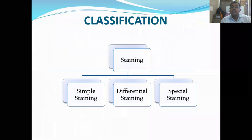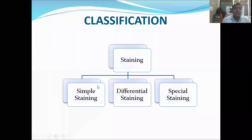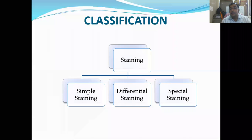Now, staining methods are principally classified into three important classes: simple staining, differential staining, and special staining. Simple staining is simple to perform with a straightforward procedure. Differential staining helps to differentiate one group of bacteria from another. Special staining is used to observe particular special structures of bacteria.